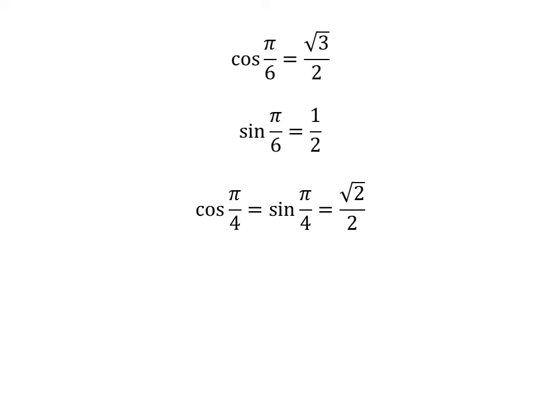We know that cosine of π/6 is equal to √3/2, sine of π/6 is equal to 1/2, and cosine of π/4 is equal to sine of π/4 is equal to √2/2. We plug in these values in the above equation.